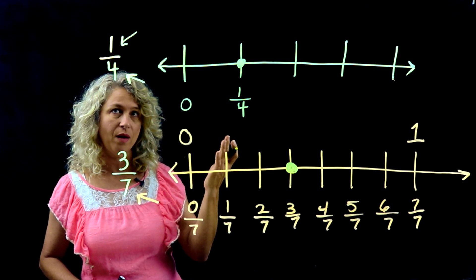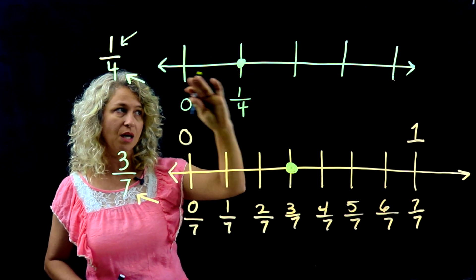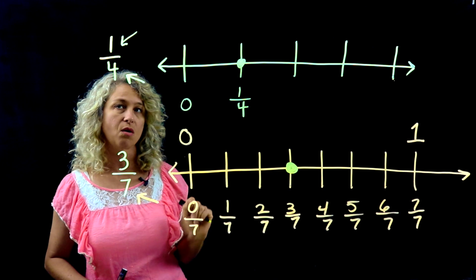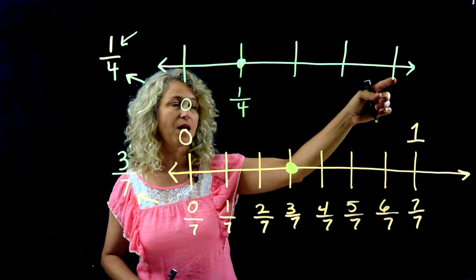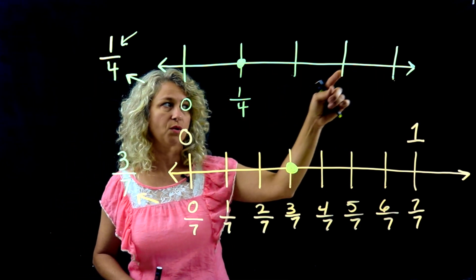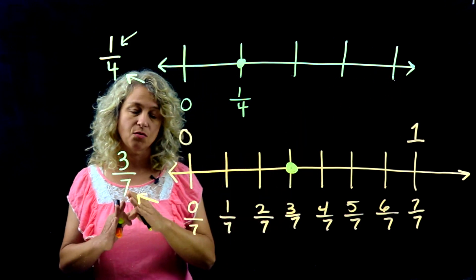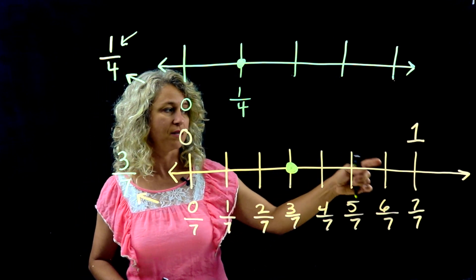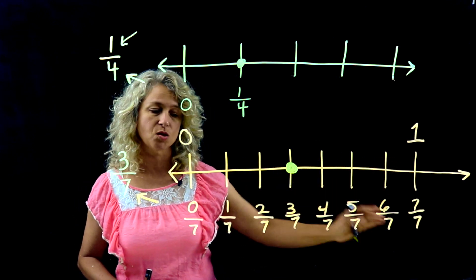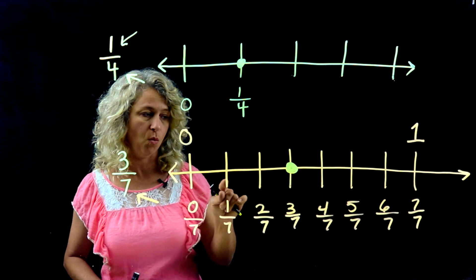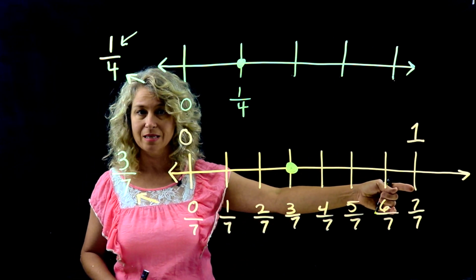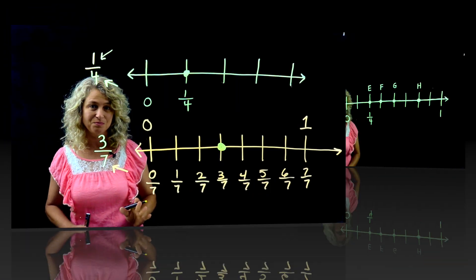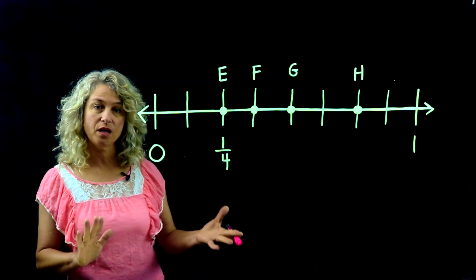Remember: when placing numbers on the number line, you'll always have one extra tick mark. For fourths, you'll have five tick marks but four equal spaces. For sevenths, you'll have eight tick marks but seven equal spaces — because this is zero, then one through seven. Just remember that tip and it will help you in drawing number lines.